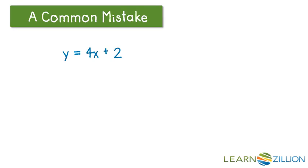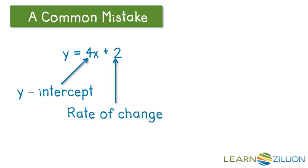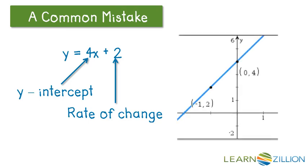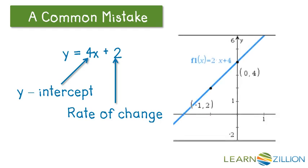A mistake that I usually see is when looking at an equation, the rate of change can be mistaken to be the constant and the y-intercept can be mistaken to be the coefficient of x. And if you would follow that through and look at a graph, you'd be looking at the wrong graph because that would be the graph of y equals 2x plus 4.